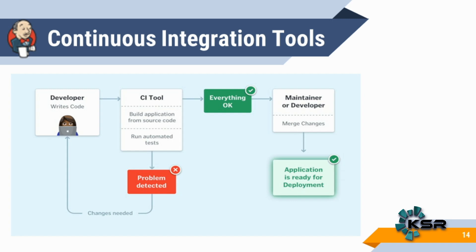This is how a complete continuous integration process works. We have seen CI as well as CD. CI is continuous integration, and CD is continuous delivery — meaning the source code has been deployed inside a particular server where your application will be ready. I hope you all understood the topics about Jenkins: the Jenkins architecture and the tools which cover continuous integration, with a small example.